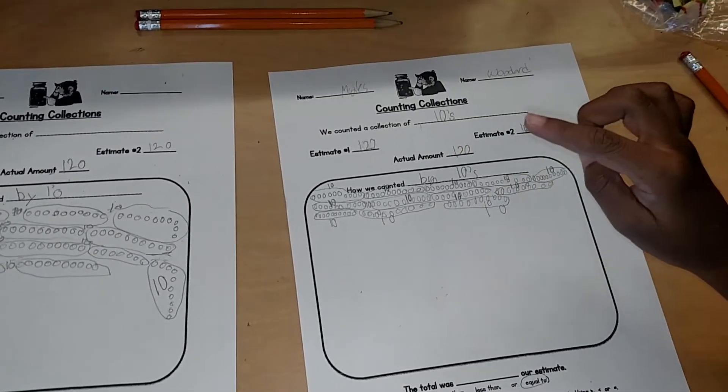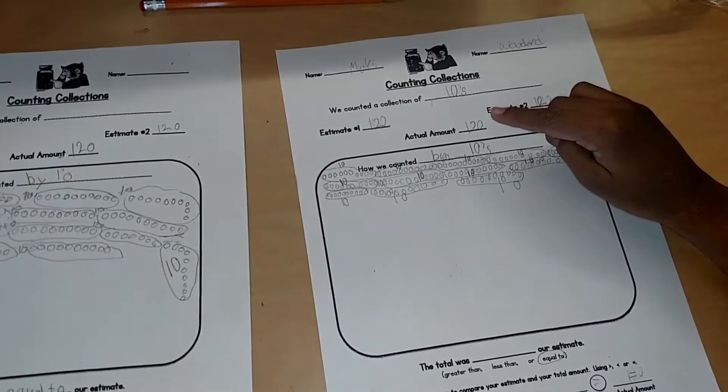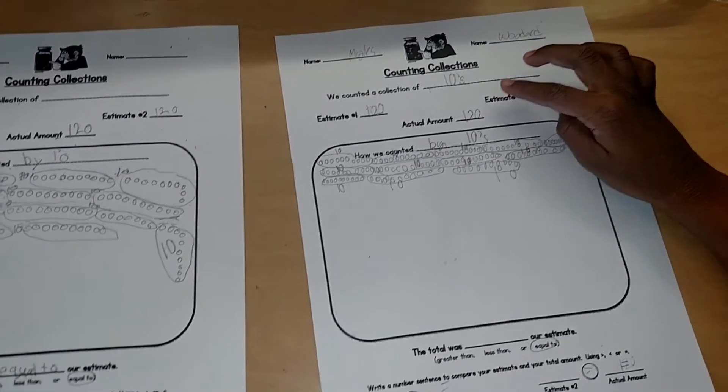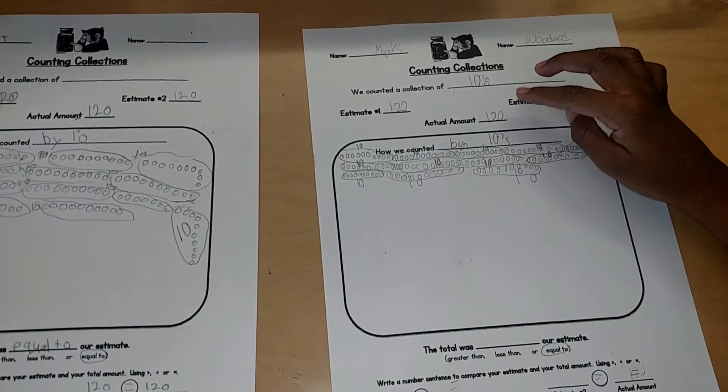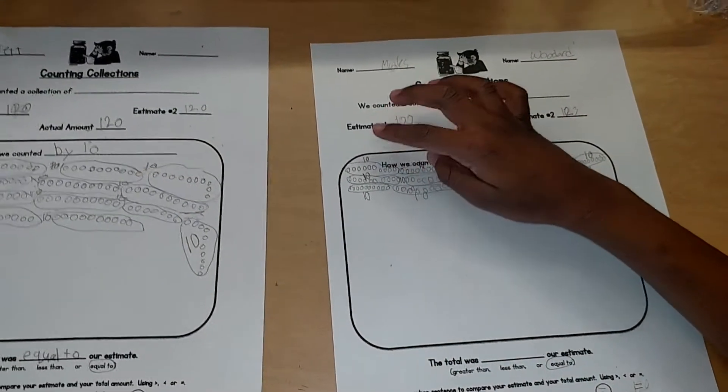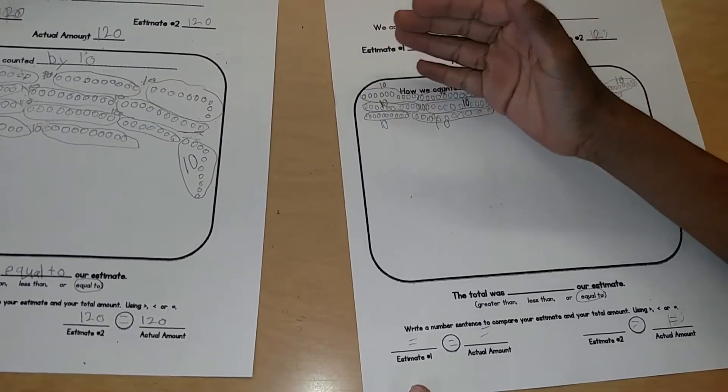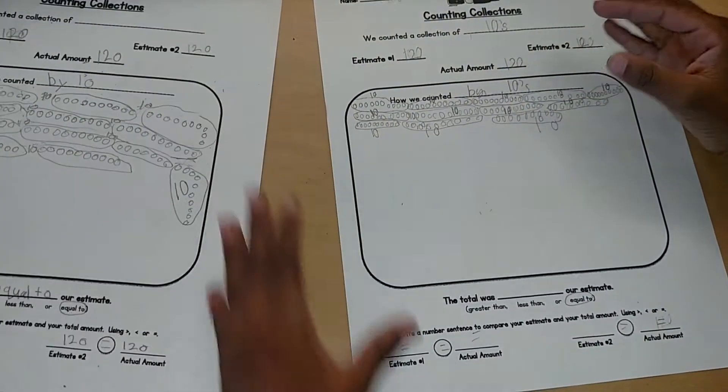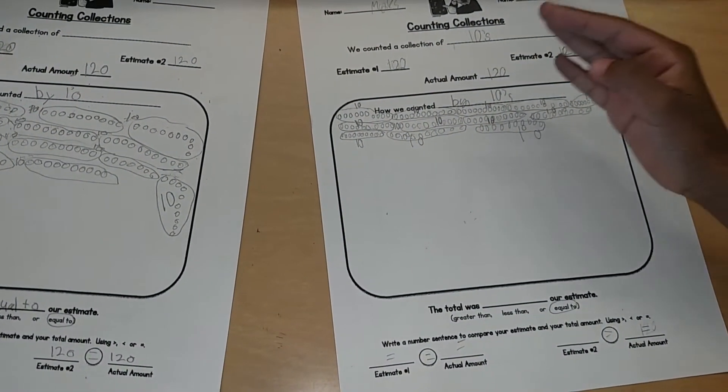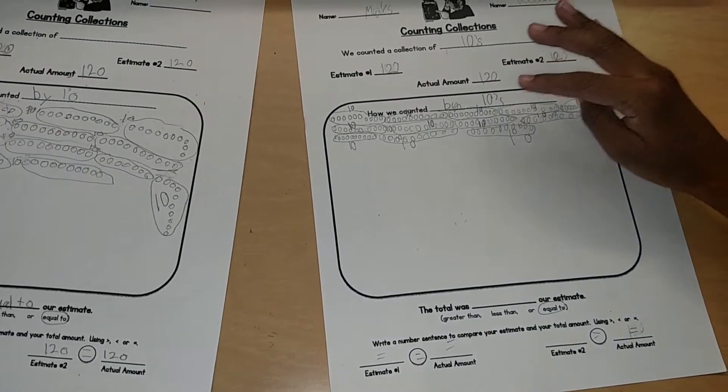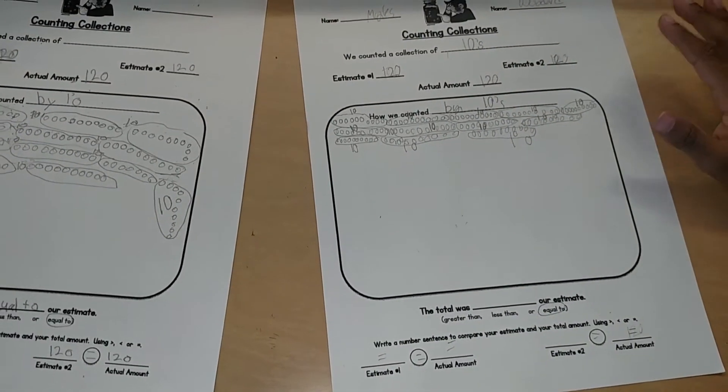So when we guessed that it was 120, it actually was 120. And we labeled the ten, like in the ten groups, so if the teacher wasn't here, they can know if these are tens in all of them.